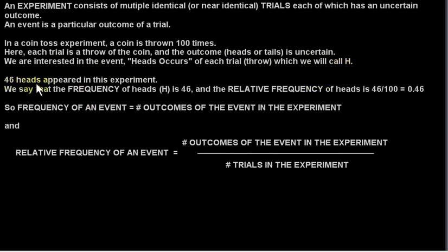Let's suppose that 46 heads appeared in this experiment. We say that the frequency of the event H is 46. And the relative frequency of H is the frequency of H, which is 46, over the total number of trials in the experiment. So we get 0.46 in this case.